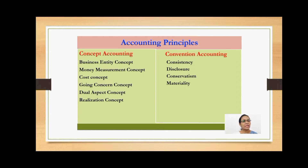Accounting concepts are classified as follows: Business Entity Concept, Money Measurement Concept, Cost Concept, Going Concern Concept, Dual Aspect Concept, and Realization Concept. The accounting conventions are: Consistency, Disclosure, Conservatism, and Materiality.